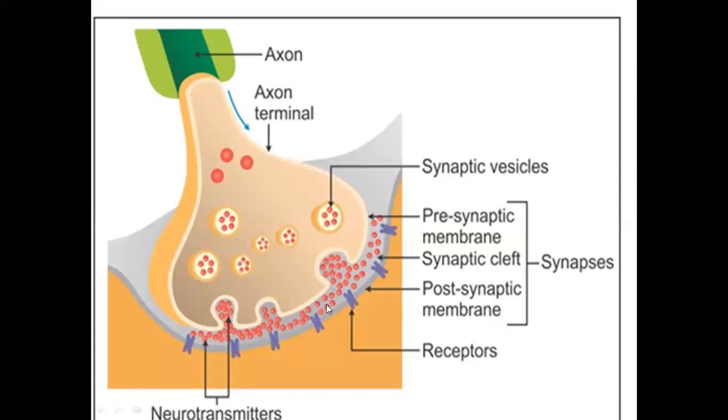The neurotransmitter released into the synaptic cleft, like acetylcholine, needs to be reused. Acetylcholine esterase enzyme helps reuse it. The acetylcholine is taken back and stored in synaptic vesicles. This is how the nerve impulse is propagated.